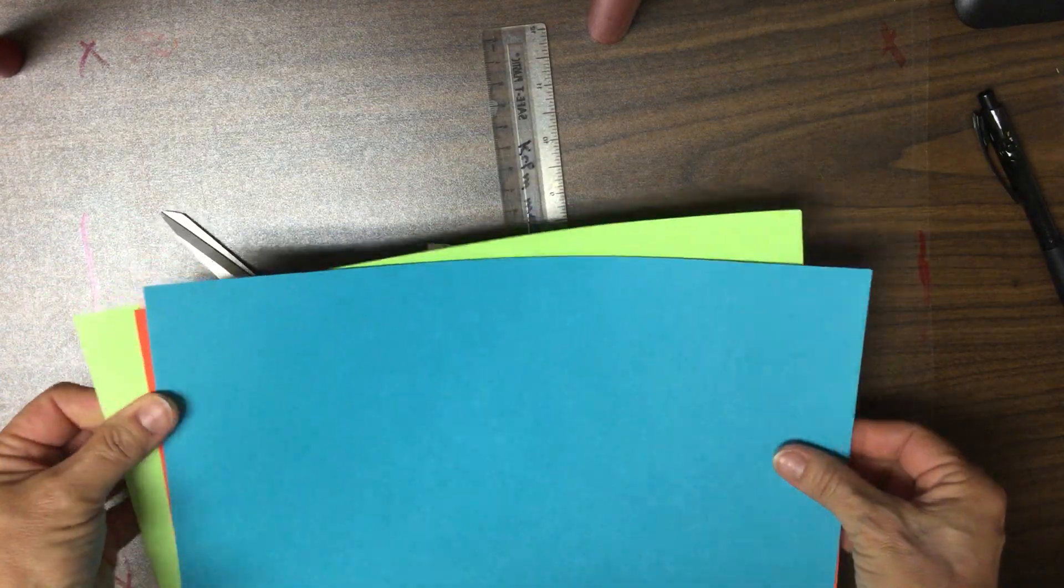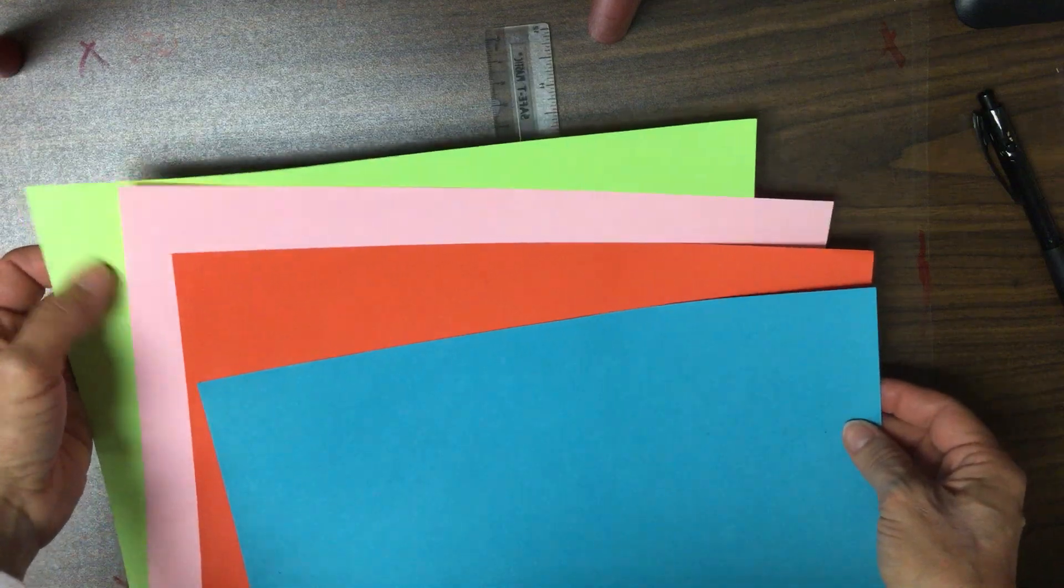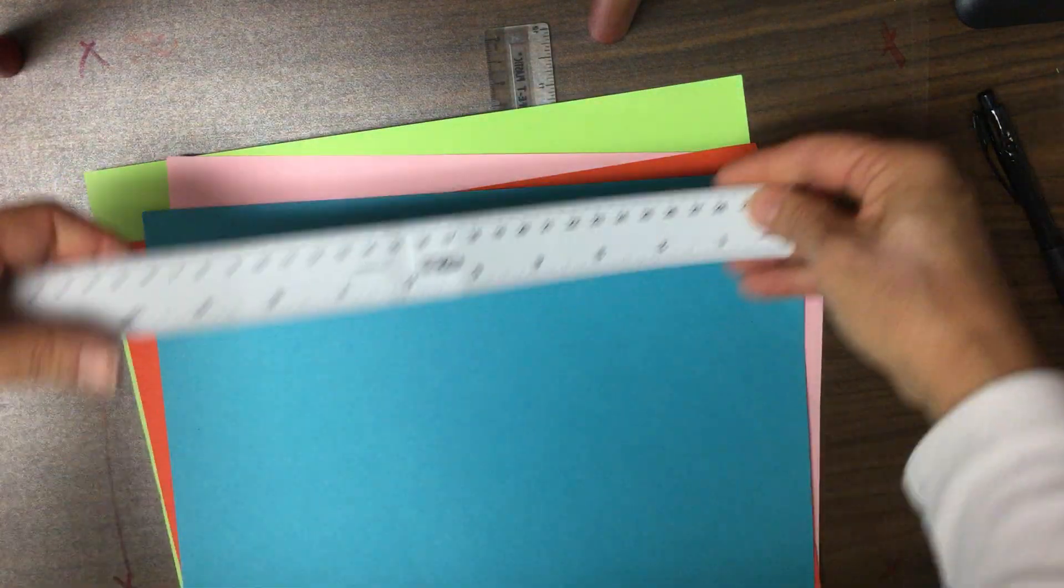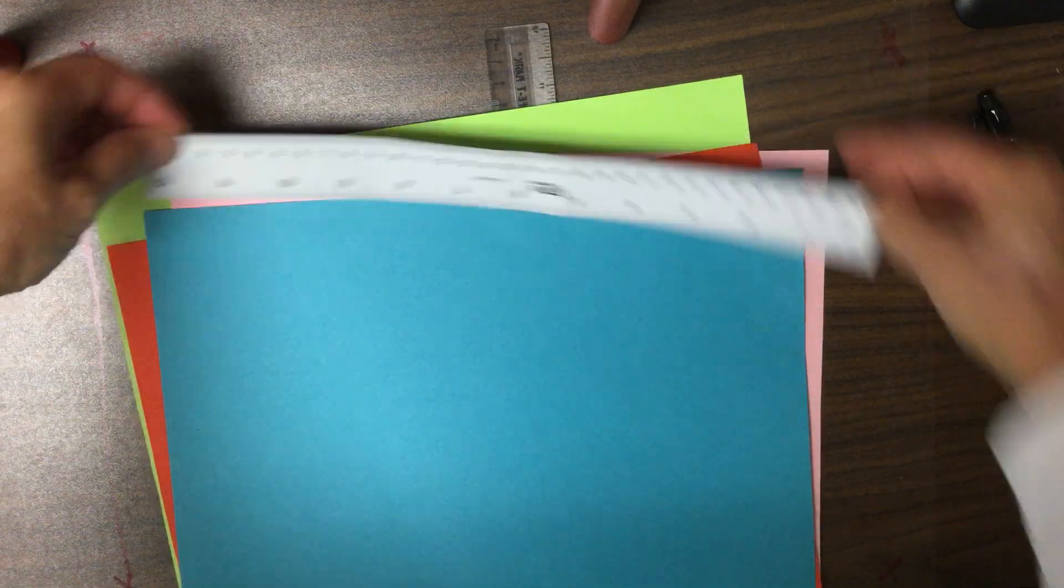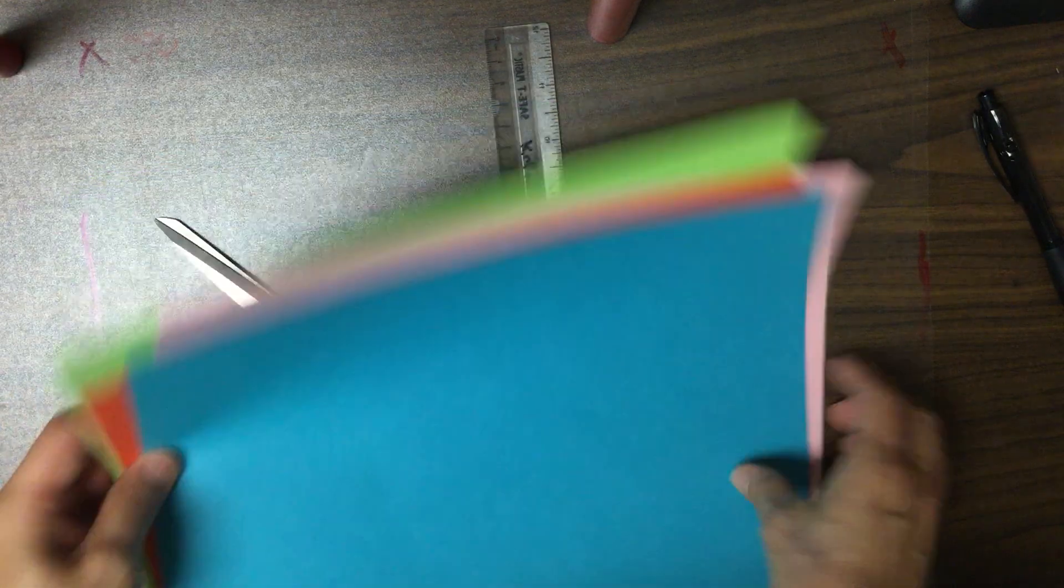First thing you're going to need is four different colors of construction paper and the construction paper needs to be 12 inches by 9 inches. So you've got your four different colors.